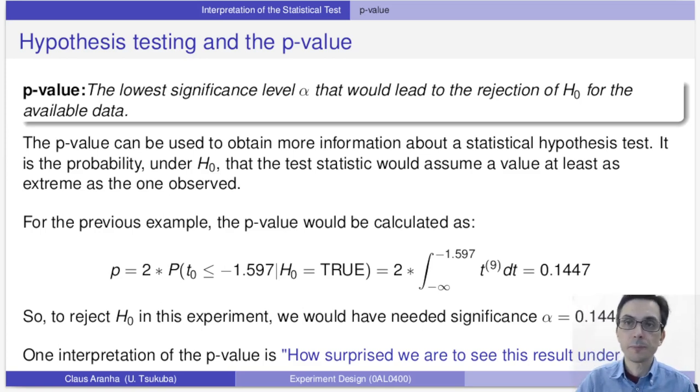For the last example in the previous video, we would calculate the p-value following this formula where the total probability area in the t-distribution when the value of the t statistic is smaller than minus 1.597. We calculate this by getting an integral from minus infinity to the value, which would give us a value of 0.1447. So to reject the null hypothesis in this experiment we would need a significance alpha of 0.1447.